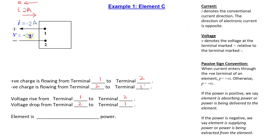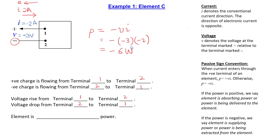We can see that in this case, the conventional current is entering the terminal marked minus. Thus, using passive sign convention, we use the power formula with a negative sign, and then substitute values. So, we get minus 3 times minus 2, and this is minus 6 watts. Since the final answer is negative, element C is also supplying 6 watts of power.